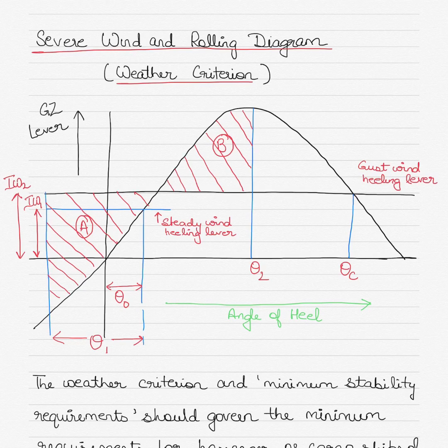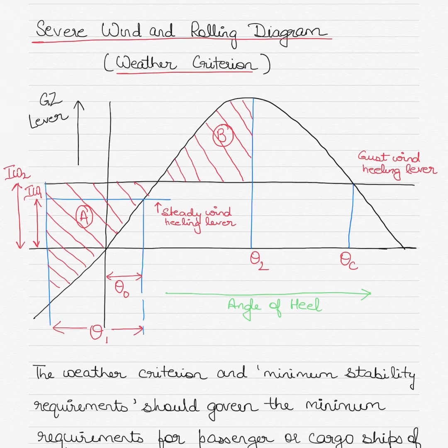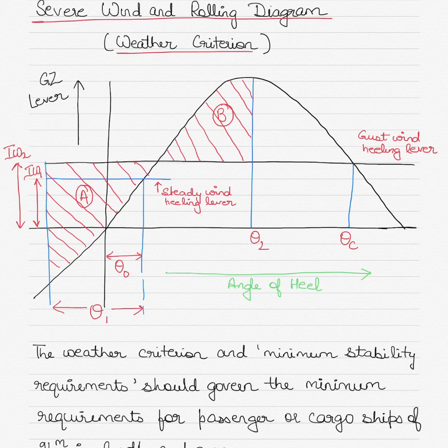Heel, as you know, is different from a list of a ship, although in both cases the ship heels or lists on one side. But heel is due to natural elements of the weather or like over-tightening of moorings. It mainly refers to the action of weather elements on the vessel.